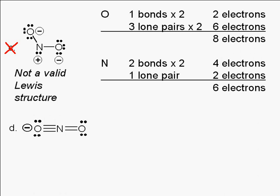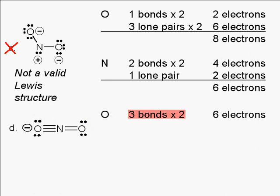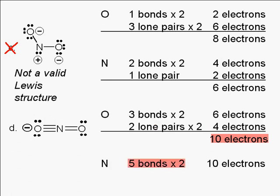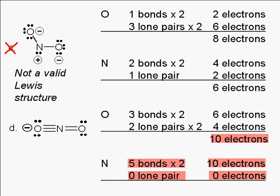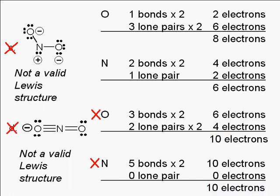What about D? We have an oxygen with two bonds and two lone pairs, which follows the octet rule. The second oxygen has three bonds giving six electrons and two lone pairs giving four electrons for a total of ten electrons. The nitrogen has five bonds giving ten electrons and zero lone pairs, for ten electrons total. Both the oxygen and the nitrogen violate the octet rule, so structure D is not a valid Lewis structure.